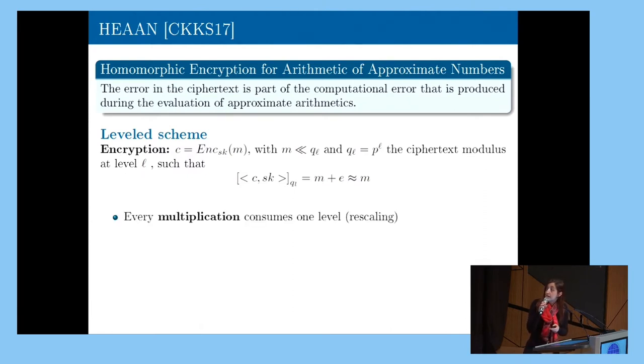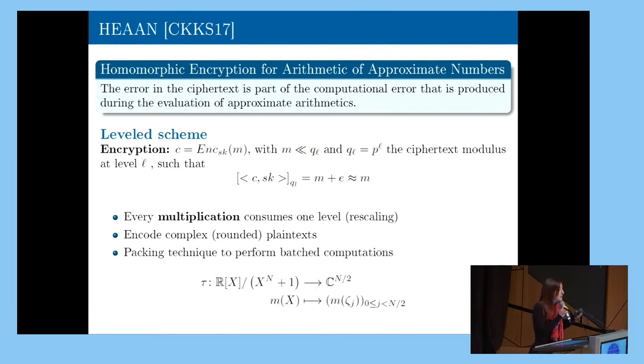So the scheme is leveled, as I said, so we can perform just a certain amount of multiplication because each multiplication consumes a level. So after L levels, we have to stop. The scheme encodes complex rounded plaintext. In particular, it can support, like many other homomorphic schemes, a packing technique.